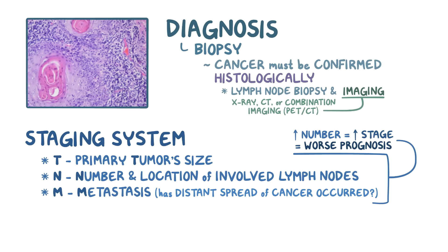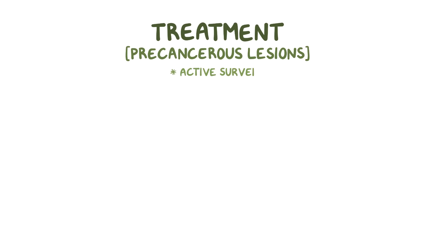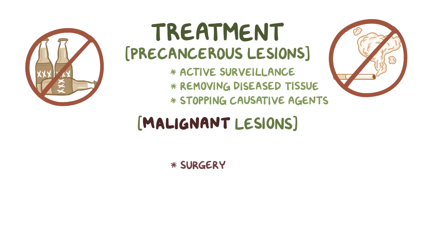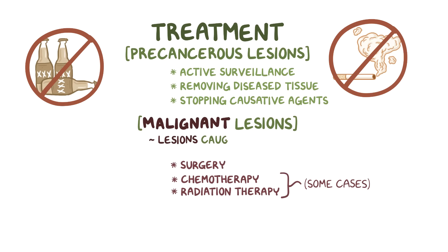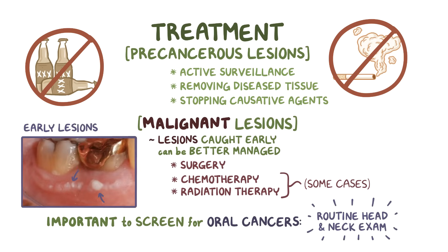While the prognosis of squamous cell carcinoma in the oral cavity depends largely on the tumor stage, HPV status is a main prognostic factor for squamous cell carcinoma in the oropharynx. Treatment of precancerous lesions starts with active surveillance, removing any diseased tissue, and stopping any causative agents like smoking and alcohol abuse. Malignant lesions are mainly treated by surgery, but some cases also require chemotherapy or radiation therapy. That's why it's important to screen for oral cancers with a routine head and neck exam in the dental office, where early red or white plaques with an unknown cause can be identified.